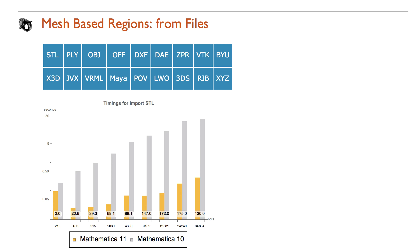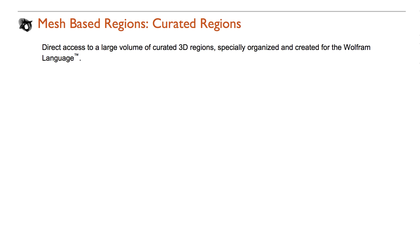Version 11 supports the import and export of 3D geometry from all standard formats, including DAE. Performance improvements are available across the board. Compare the timings for import of the STL file format. The number at the bottom tells how many times faster Mathematica 11 is compared to Mathematica 10.